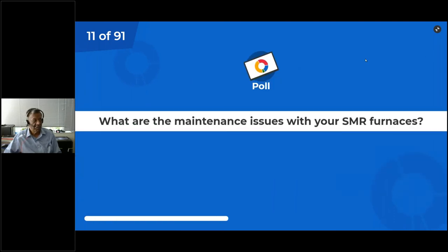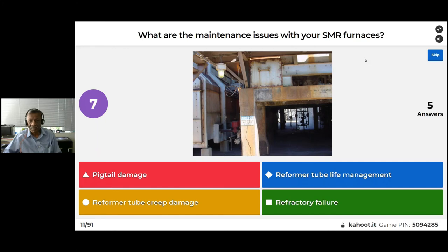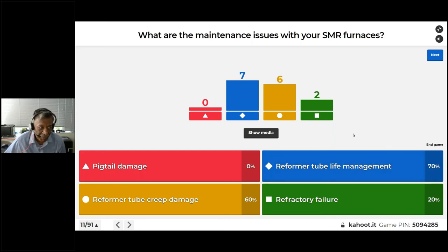Here's something more we want to talk about: what are the maintenance issues in your furnaces? Maybe you are replacing your tubes every two, three, or five years, or you are having refractory failures or pigtail damage. Most people are concerned about tube life. What I feel is that tubes have become like a consumable — every three years people just dutifully replace the tubes without going into root cause analysis.